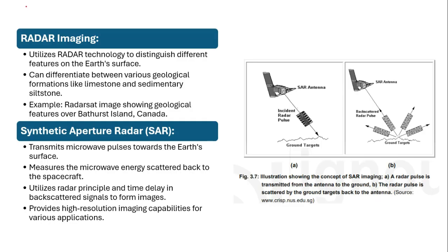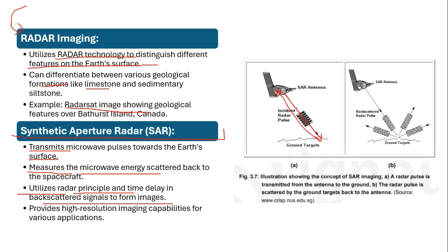Within active microwave sensing, radar imaging utilizes radar technology to distinguish different features on the earth's surface, including various geological formations like limestone and sedimentary siltstone. SAR (Synthetic Aperture Radar) transmits microwave pulses toward the earth's surface and measures the backscattered microwave energy. It uses time delay in backscattered signals to form images — the time it takes for signals to travel and return — providing high-resolution imaging capabilities for various applications.